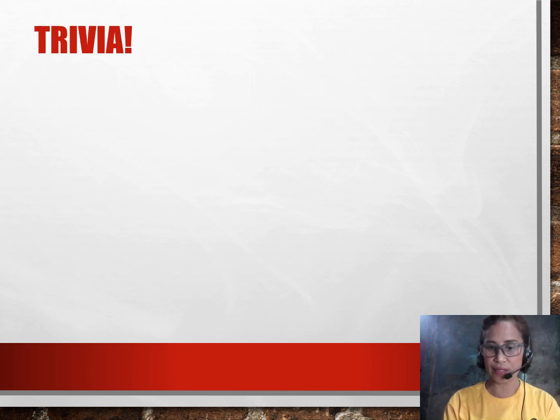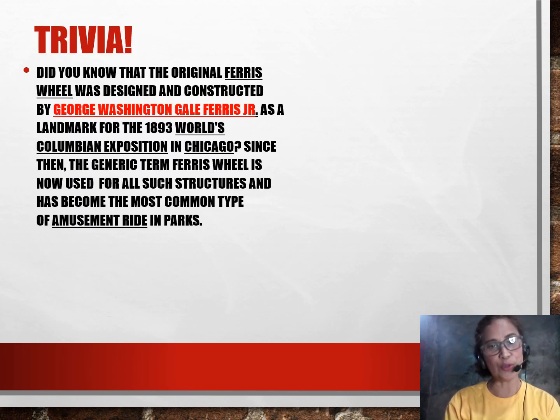Before moving on to the details of our lesson, let me share with you this very interesting trivia. Did you know that the original Ferris wheel was designed and constructed by George Washington Gale Ferris Jr. as a landmark for the 1893 World's Columbian Exposition in Chicago? Since then, the generic term Ferris wheel is now used for all such structures and has become the most common type of amusement ride in the parks.